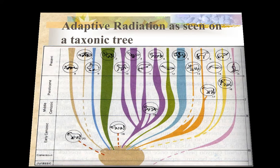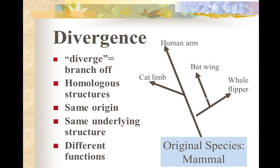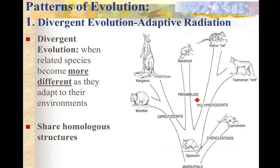Two new terms — after we talk about adaptive radiation: divergence and convergence. Closely related species become dissimilar as they move to different habitats. This slide shows homologous structures. You could use this to talk about different types of canines or bears — the Virginia black bear, the Kodiak bear, the brown bear, the grizzly. Some say they're the same, but they have different names because of different locations. That's divergence.